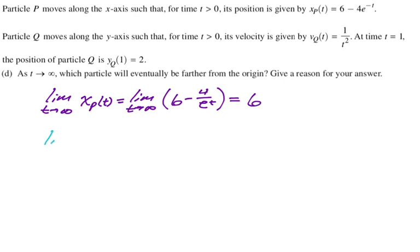Now y, we're going to take the limit as t approaches infinity of y_Q(t). And that's going to be the limit—so we're importing this from the last part—t approaches infinity of three minus one over t. Now, one over t as t approaches infinity definitely goes to zero, which means this will just give us three.